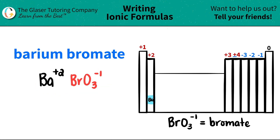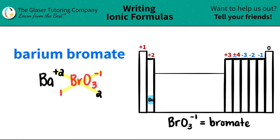Now we have both components. We do this little trick where we take the charges and crisscross them down to see how many of each we need. The plus two crisscrosses down, telling me that I need two bromates. And then the one crisscrosses down, telling me that I just need one barium. When we do this crisscross, don't worry about the charges anymore — we're just looking at the subscripts at the bottom. These are counting numbers, don't worry about the positives and negatives.